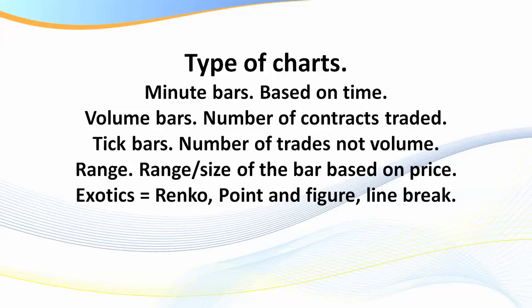With tick bars, there could be maybe three trades executed but 200 contracts traded, so it's based upon the number of trades, not volume. Then we've got range bars, where the size of a bar is based upon price. For example, one range on the ES is one four-point, which is four ticks — point two five is a quarter of a point. Then you've got your exotics: Renko, Point and Figure, three-line breaks, etc. I really like volume, tick, and range. Personally, I like range on Forex — a five, seven, eight, or thirteen range on different Forex markets — and I prefer tick and volume bars on futures.